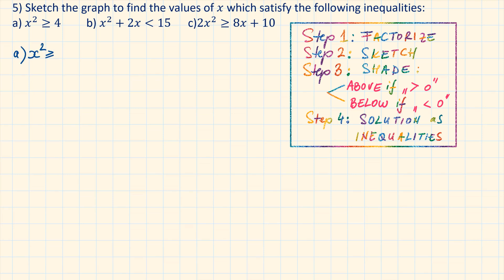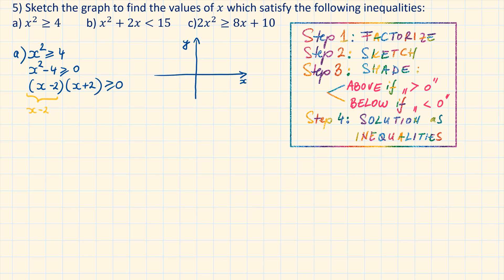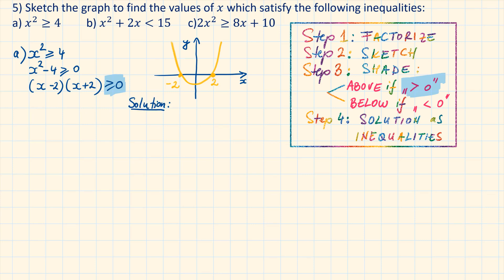Part A: x squared is larger than or equal to 4. Subtracting 4 from both sides gives x squared minus 4 is larger than or equal to 0. Using the difference of two squares, we factorize as (x minus 2)(x plus 2). Making x minus 2 equals 0 gives x equals 2, and x plus 2 equals 0 gives x equals minus 2. We sketch the quadratic graph upwards since the x squared term is positive. The symbol larger or equal to 0 represents above the graph, giving a two-part solution: x is less than or equal to minus 2 and x is larger than or equal to 2.